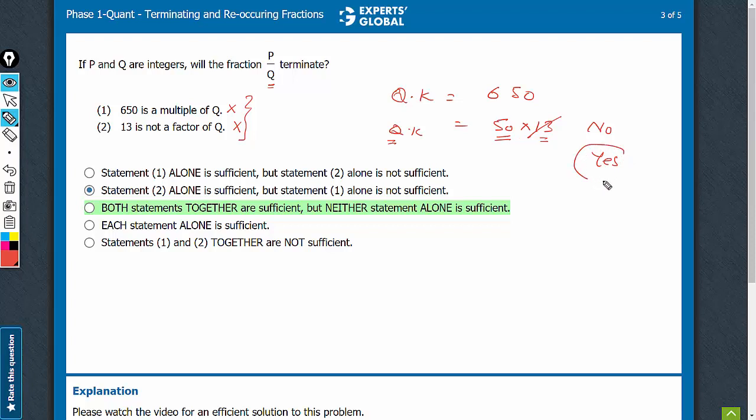In all such cases, we will only get yes. No can be eliminated because no was for the cases when Q had a 13 in it and therefore, on combining, we can say yes, P upon Q will terminate and therefore, combining worked. C is the right answer.